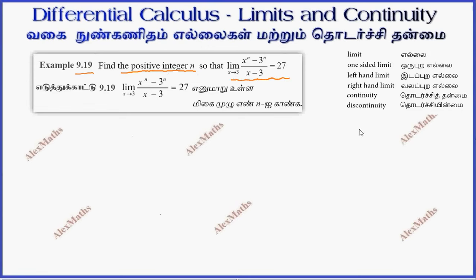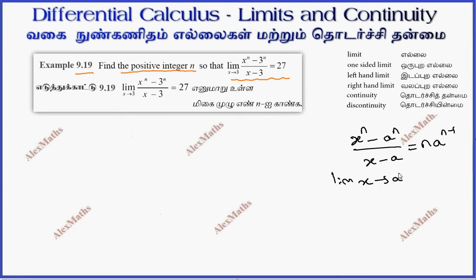We know that the limit of (xⁿ - aⁿ) divided by (x - a) equals n·aⁿ⁻¹ when x approaches a. Now we know that the limit as x approaches 3 of (xⁿ - 3ⁿ) divided by (x - 3) equals 27.